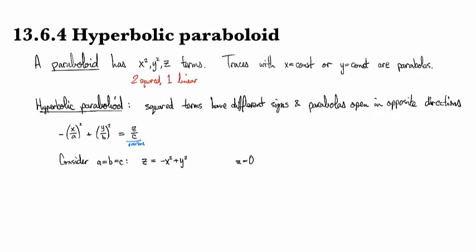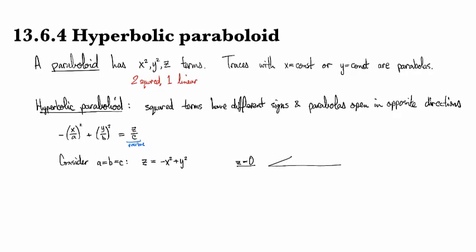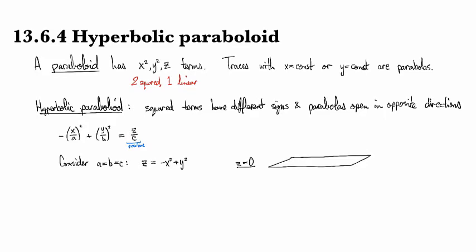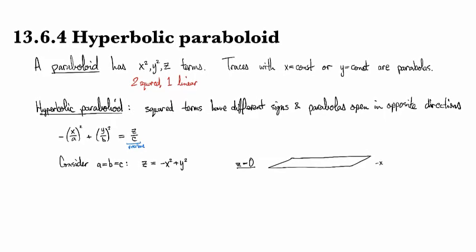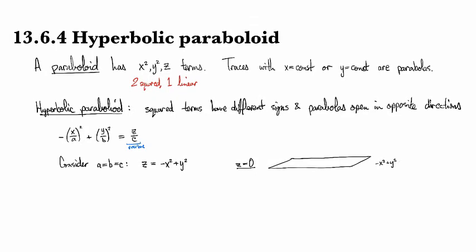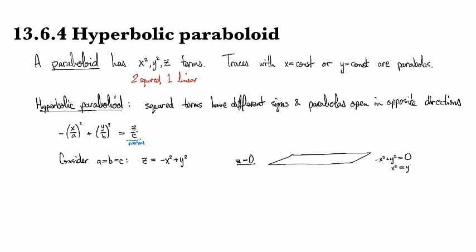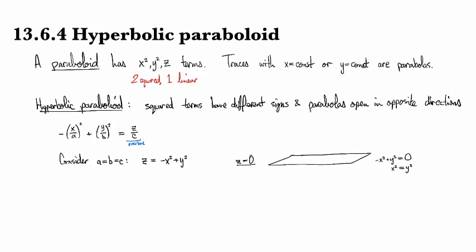So we can look at the trace z equals zero. For this one we're looking at minus x squared plus y squared equals zero. So that's the same thing as x squared equals y squared. Oh, that's a curious one. Maybe you haven't come across this one before.